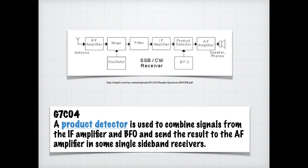Perhaps you recall from the technician license course that a product detector is a type of demodulator used for AM and single sideband signals. For the exam, you need to know that a product detector is used to combine signals from an IF amplifier and a BFO or beat frequency oscillator and send the result to the AF amplifier in some sideband receivers.